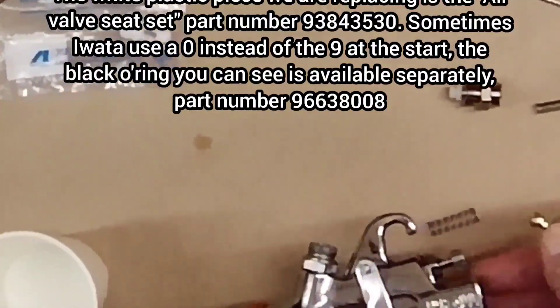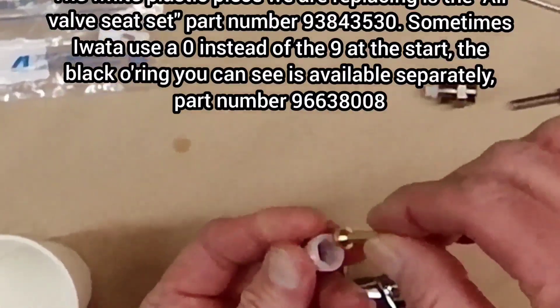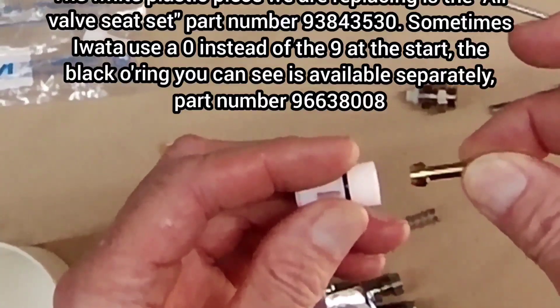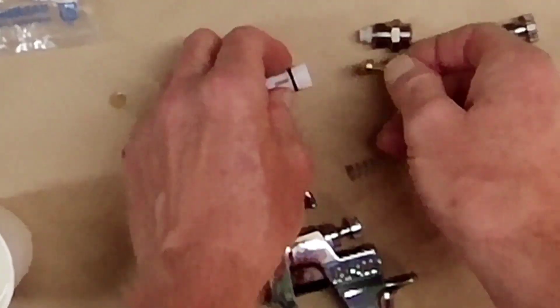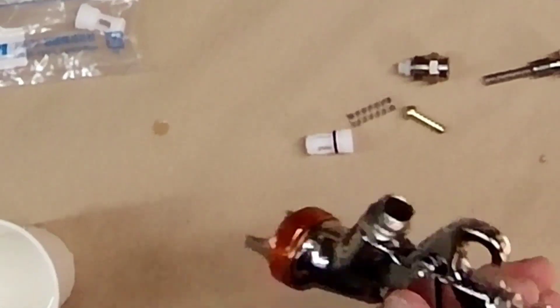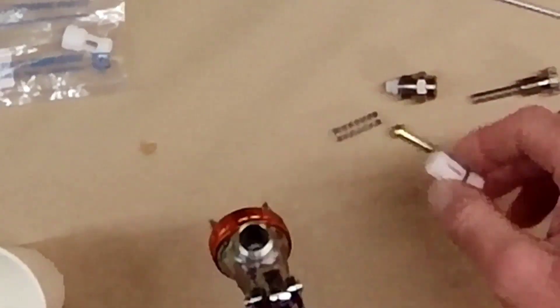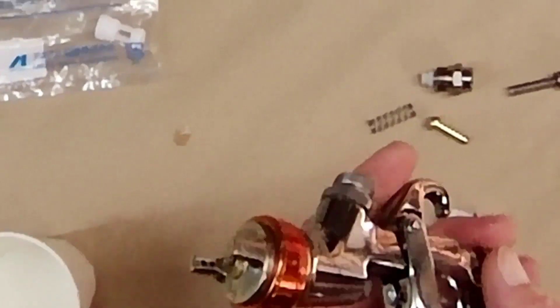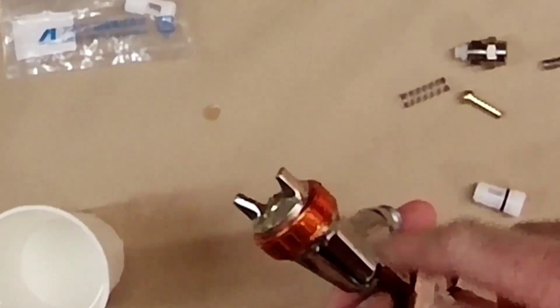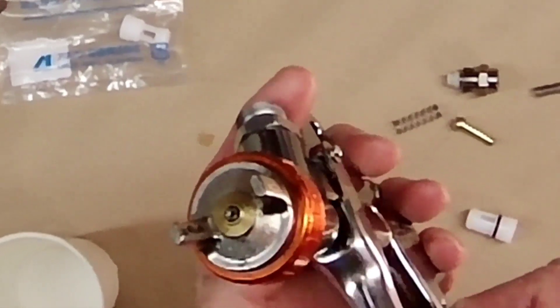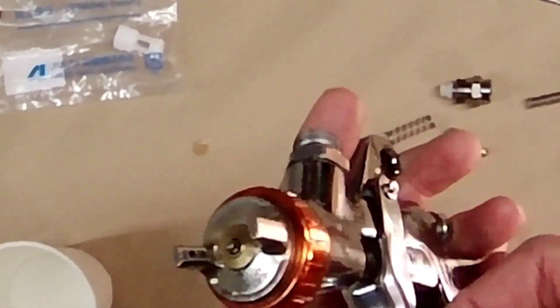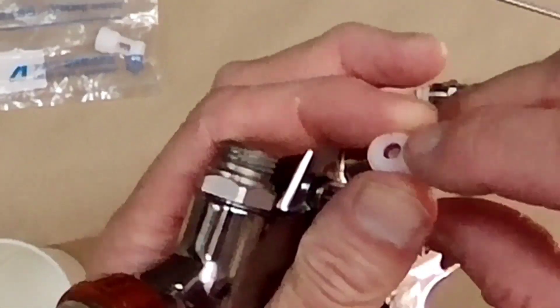This actually sits there. You see this ridge here around here? This is where this sits. And if there's any impurities or anything to make this not a good seal against this plastic there, then air will escape through and it escapes through here, through the body, and then obviously comes out the cap, exactly the same as when you pull the trigger.